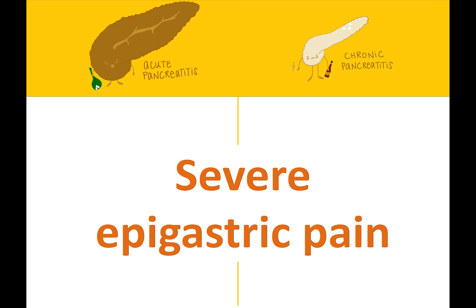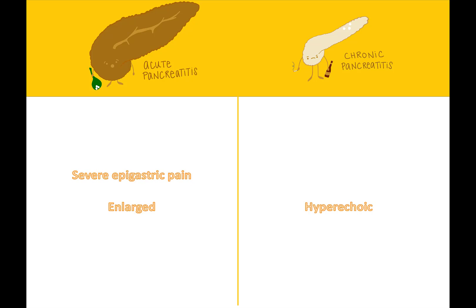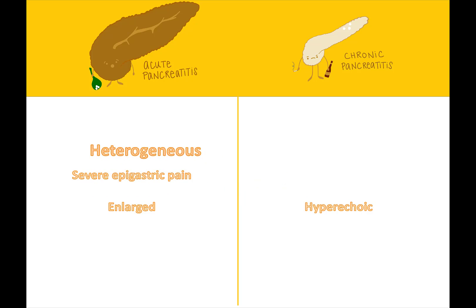Who more likely has severe epigastric pain? Acute pancreatitis. Pain is found at the location of the pancreas in the central upper abdomen. Which pancreatitis is more likely to be heterogeneous? Acute pancreatitis. Another feature in acute diseases — the pancreas is very heterogeneous.